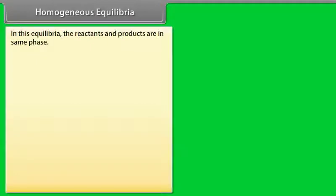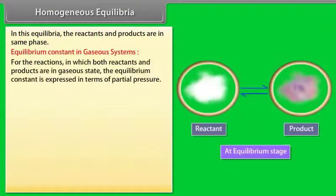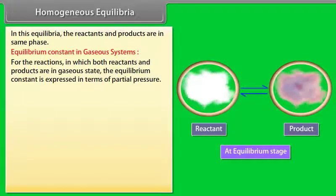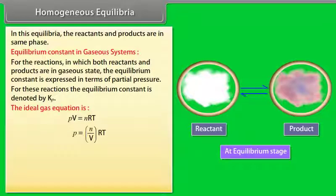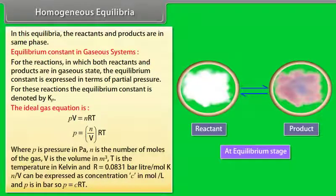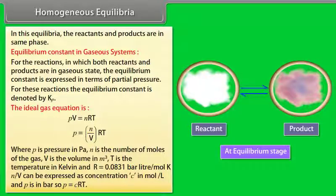Homogeneous Equilibria. In this type of equilibria, the reactants and products are in the same phase. Equilibrium Constant in Gaseous Systems: for reactions in which both reactants and products are in gaseous state, the equilibrium constant is expressed in terms of partial pressure and is denoted by KP. From the ideal gas equation PV = nRT, we get P = (n/V)RT, where P is pressure in Pascal, n is moles, V is volume in m³, T is temperature in Kelvin, and R = 0.0831 bar·L/mol·K. Since n/V equals concentration C in mol/L, P = CRT.